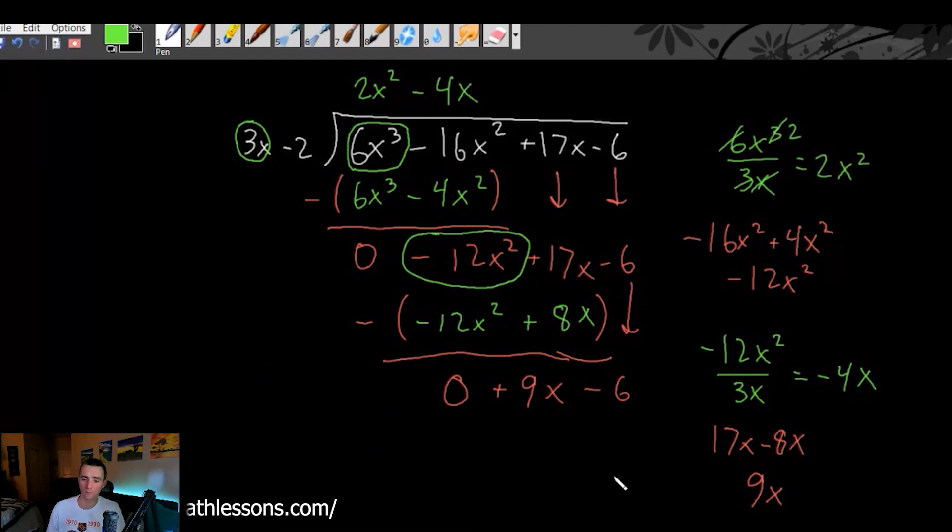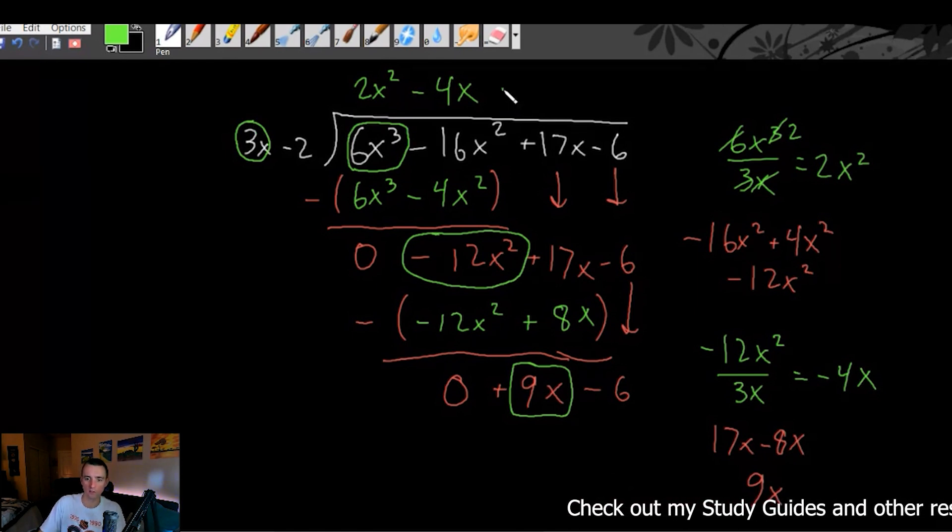But anyway, back to the problem here. We'll take this 9x now. Now we want to look at this leading term, positive 9x. We do 9x divided by 3x. And in this case, it's going to be 3. So 9x divided by 3x is 3. So we put a plus 3 up here.